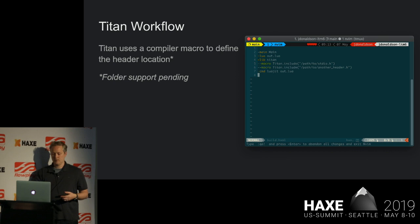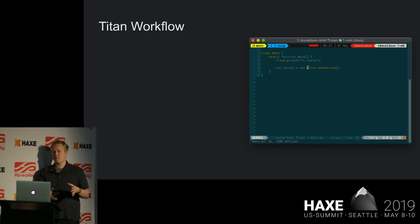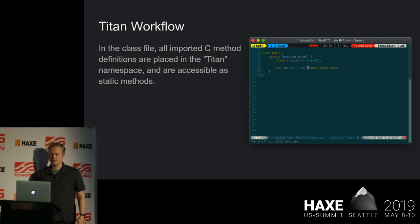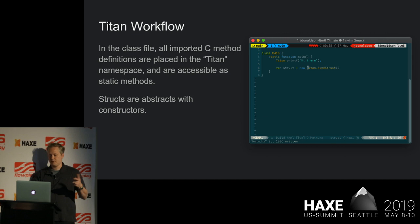This is only supporting the Lua target with LuaJIT runtime. When you're using it inside a main class — when you're actually writing the HAXE code — all you need to do is once you've passed in those compiler directives, all of those methods and structs that you wanted are now attached to the Titan namespace, the Titan class. The macro will build all that, and you'll have the ability to create a new struct or call that printf function from standard I/O. Everything is accessible as static methods, and structs are abstracts with constructors. I've mapped the HAXE constructor into the specific FFI calls that you need to make.